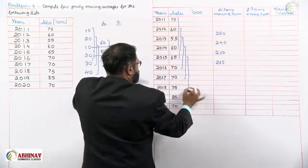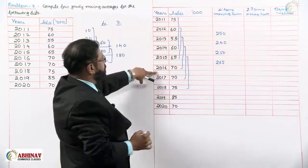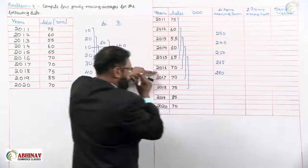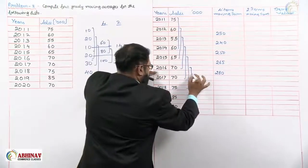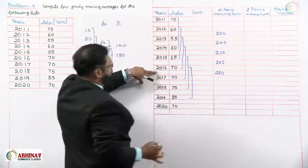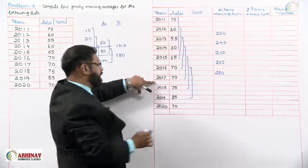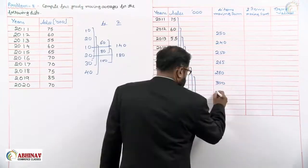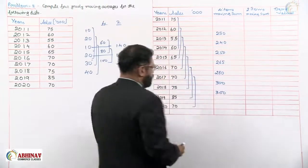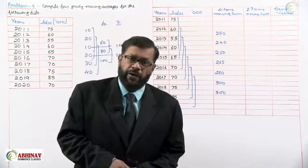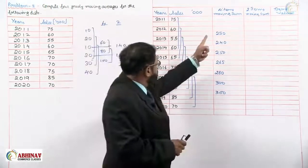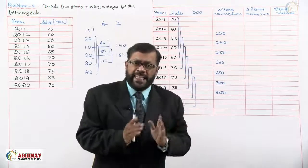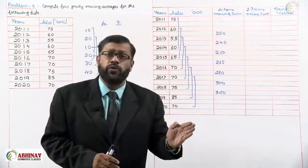The next four years' total falls between years 16 and 17, giving 280. The next set of four years, starting from year 16 and ending at year 19, gives a total between years 17 and 18 of 300, and again 300. As we can observe, the four items moving sums are not exactly for any single year — they fall in the middle — which is why we need the two items moving sum column.